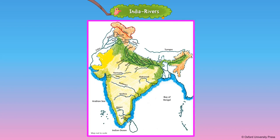There are five rivers that join the Indus. These rivers flow through Punjab, which gets its name from them. The word Punjab means the land of five rivers. The rivers are the Beas, the Ravi, the Chenab, the Sutlej, and the Jhelum.